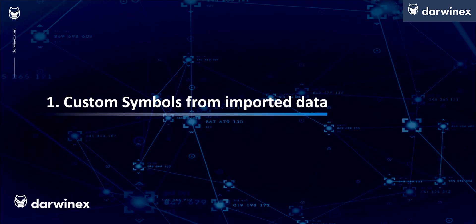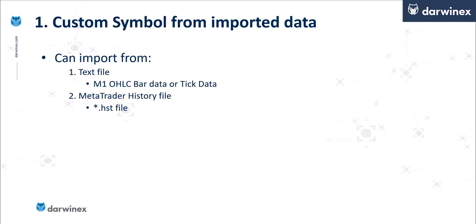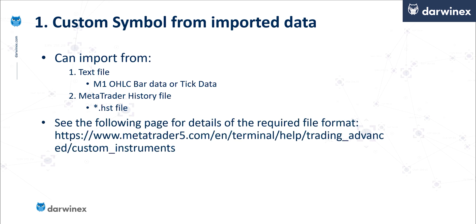Let's first cover the data import option. There are two options for importing your data. The first is from a text file, which can be based on either M1 OHLC data or tick data, depending on your preference. This option is most applicable when you're sourcing your data from a third-party provider. The second type of file that can be imported is a MetaTrader history file, which is most appropriate when transferring data from one MetaTrader instance to another — in particular from one broker into another broker's MetaTrader instance. I'm not going to cover the format of those files in great detail, but if you use the URL provided, it will give you all the information you need, and I will also be showing you a step-by-step demo shortly.